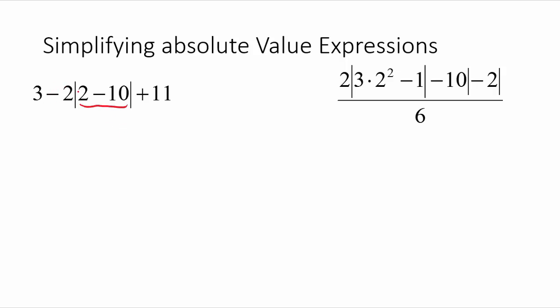It's a common mistake that people want to distribute into absolute values. It's usually not a good idea. The only time it can work is if that number is positive. But if it's all just numbers here, what I would do is just evaluate this first. So 2 minus 10 is just going to be negative 8, so we'll change this to a negative 8.